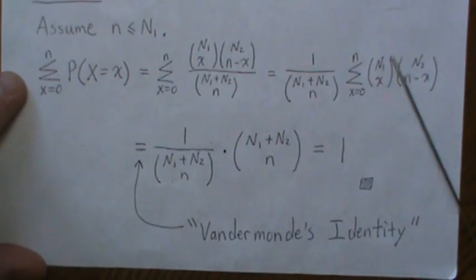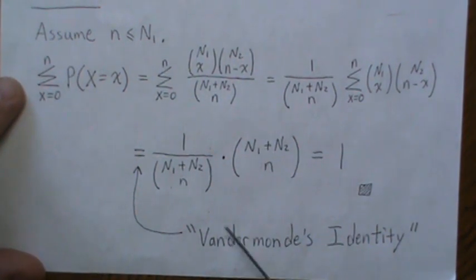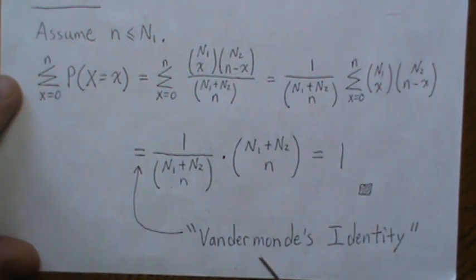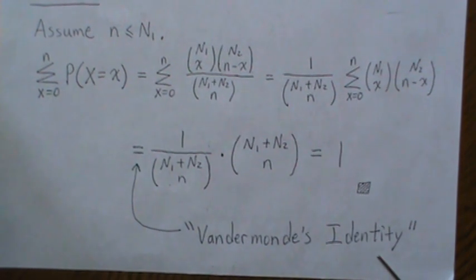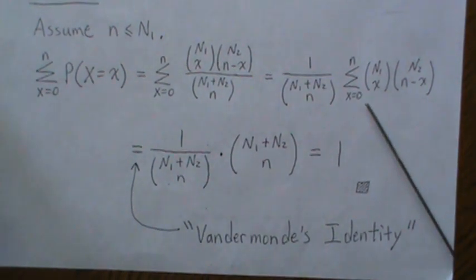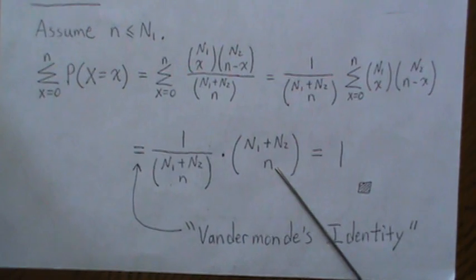And to show that this is this identity, I have a video out called Vandermonde's identity. If you want to search it, it's actually a very simple proof that those two equal.